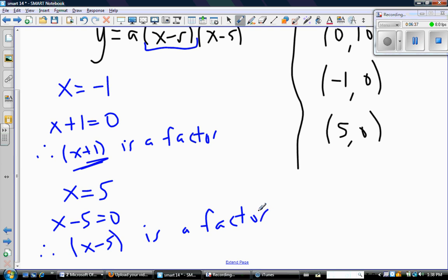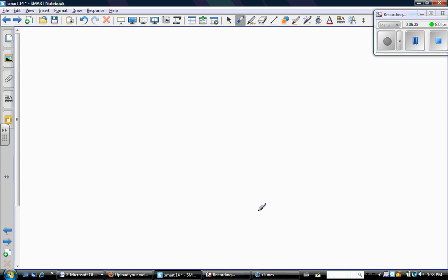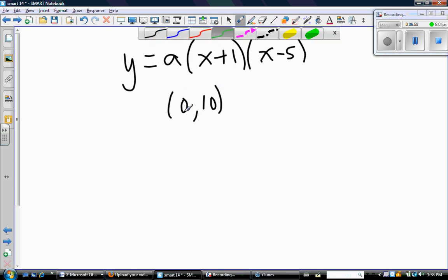So let's put a new page up and rewrite my equation. Now, I still don't know what a is, so I'm just going to have to write a. But I now know that my two factors are x plus 1 and x minus 5, but I don't know a yet. So the other piece of information that I know is the y-intercept is right here.